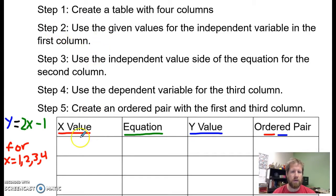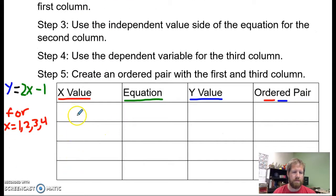Step two is going to be using my independent value or my x variable. The values that I'm given for that are going to go into this column. So I have one, two, three, and four. My two is a little bit iffy there. One, two, three, and four. Those are the values I'm given.